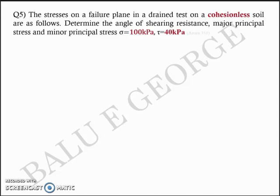Good morning. We will continue our discussion on the numerical problems on the shear strength of soil. Question number 5: The stresses on a failure plane in a drained test on cohesionless soil are as follows. Determine the angle of shearing resistance, major principal stress, and minor principal stress for given sigma and tau.